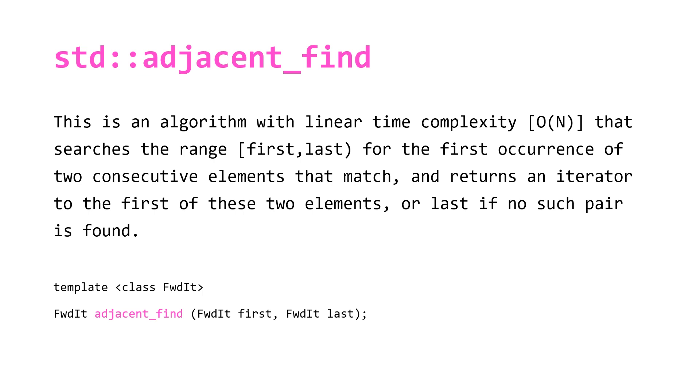Adjacent_find is an algorithm with linear time complexity that searches the range first to last for the first occurrence of two consecutive elements that match, and returns an iterator to the first of these two elements, or last if no such pair is found.